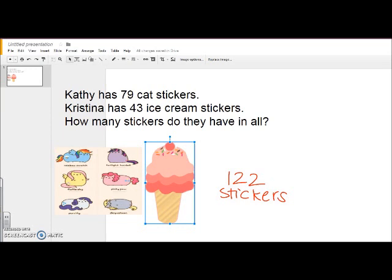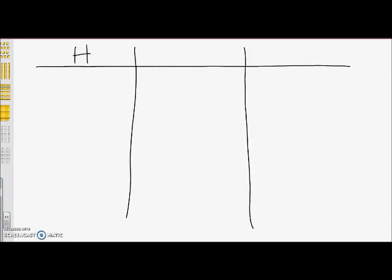After we finish with the concrete model, we can move on to the pictorial model. We will draw out our place value charts again: hundreds, tens, ones. We will draw 79: seven lines and nine dots. We will also draw 43: four lines and three dots.